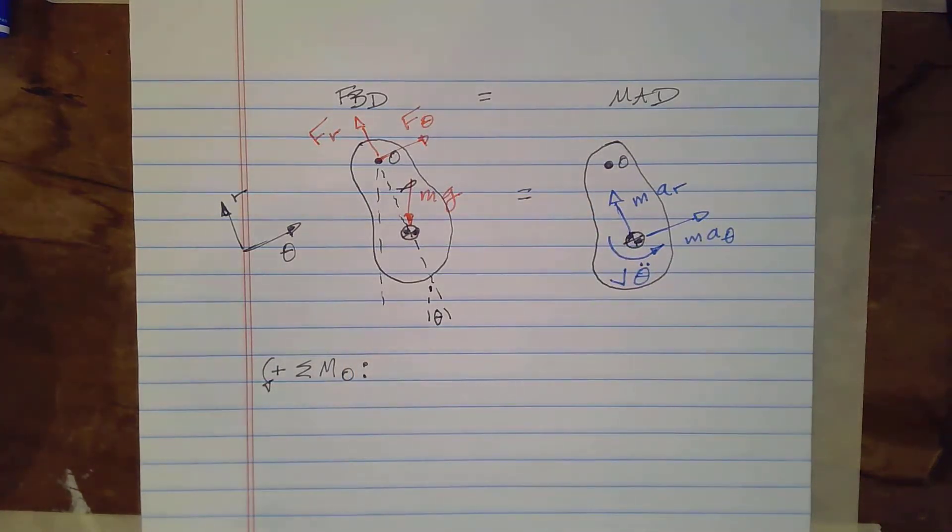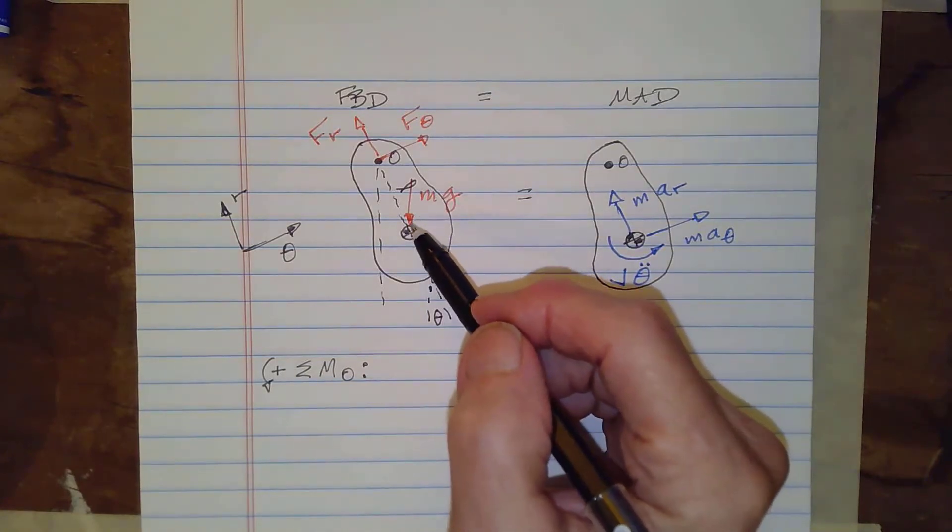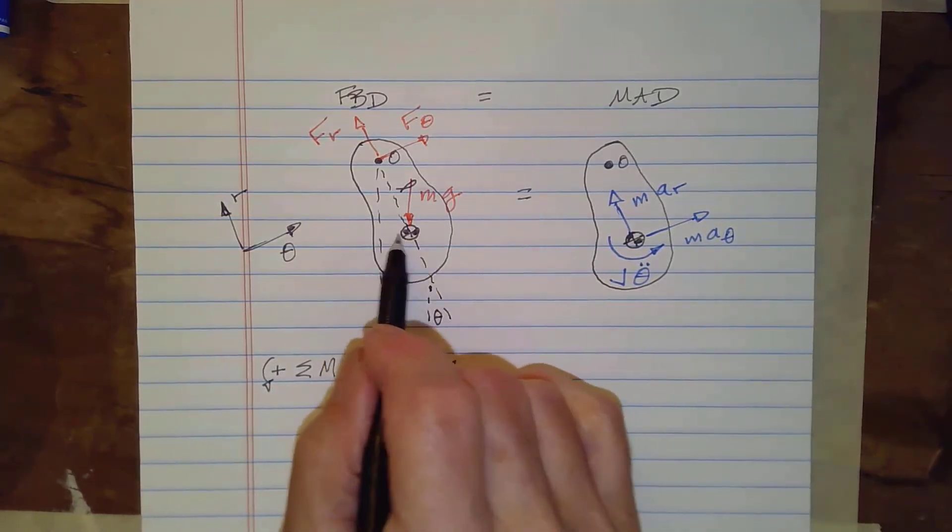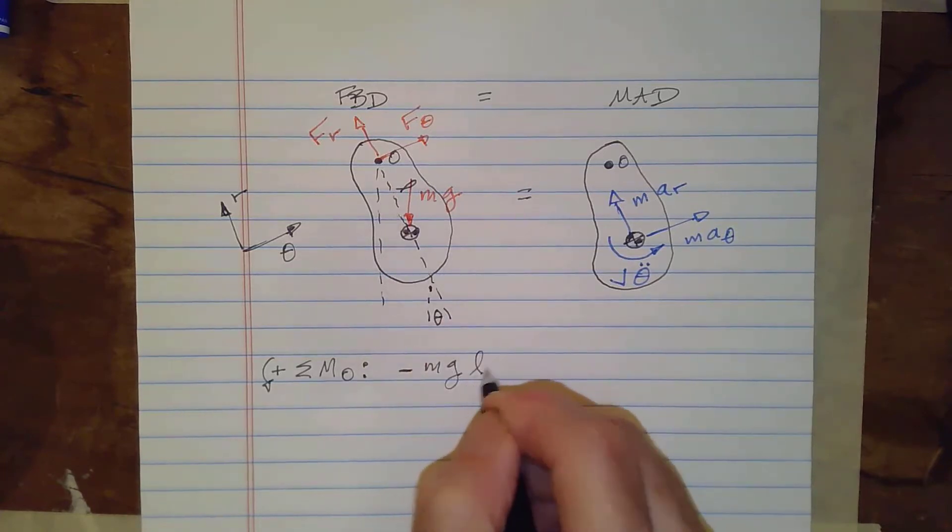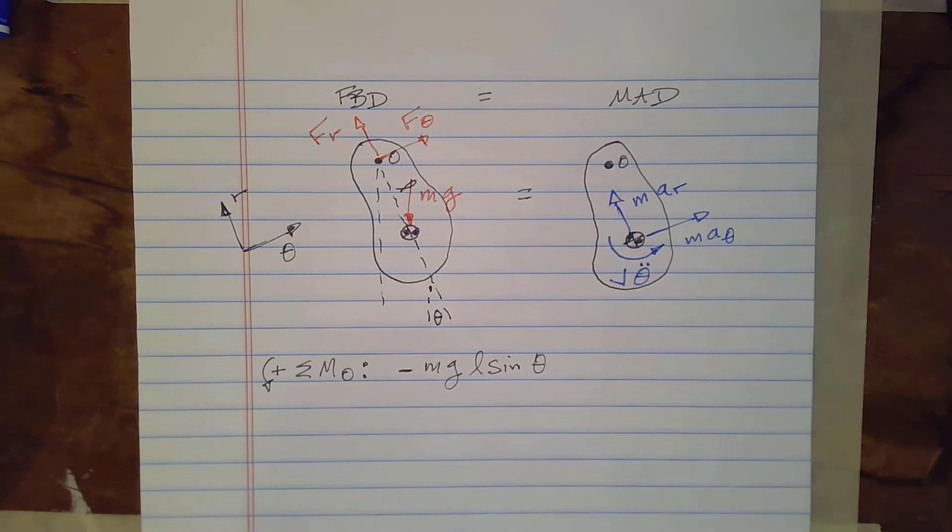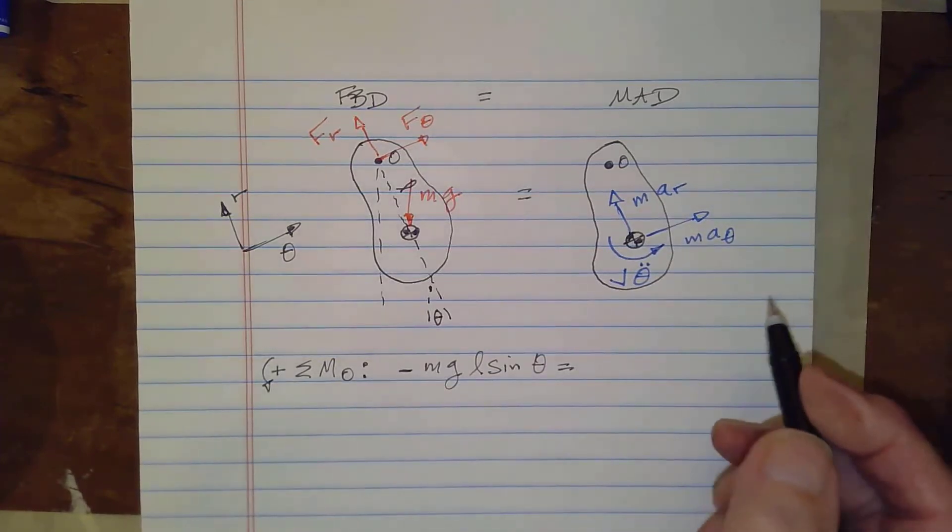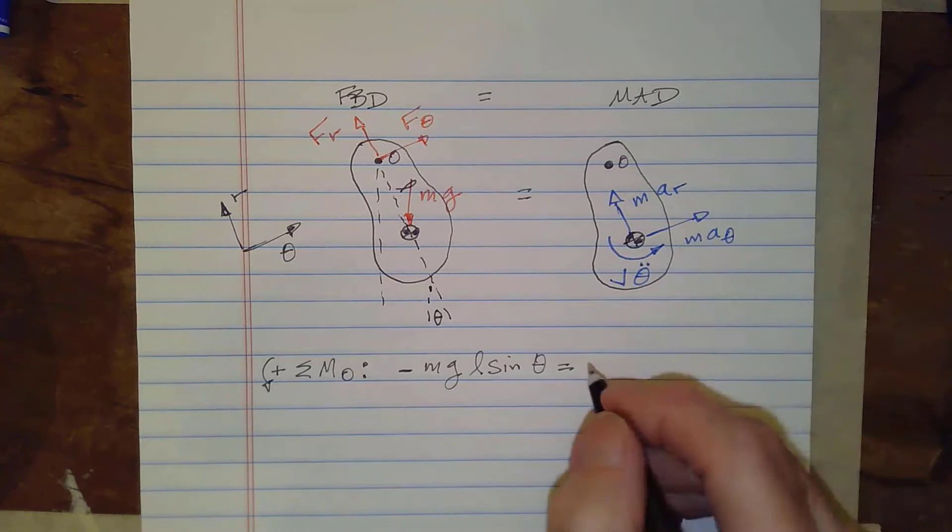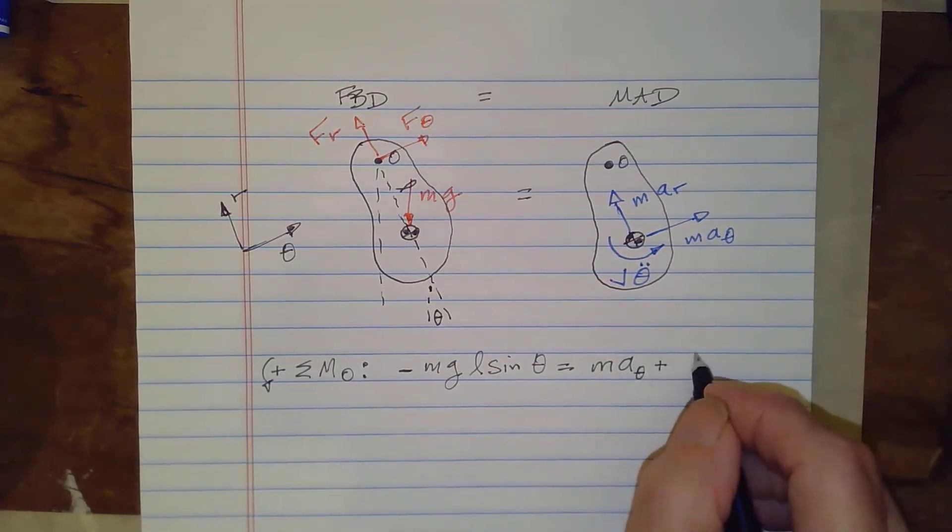Okay and if we do that since those two forces act through point O we can ignore them or they have zero moments so they just don't enter into the picture. Now one thing that I didn't put here is we have a length here L and that's the length from the pivot point to the center of mass. We will need that so if we sum the moments about point O the only force that has a moment about point O is the weight.